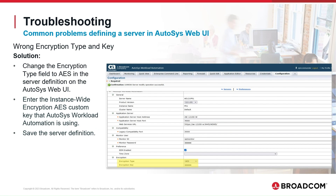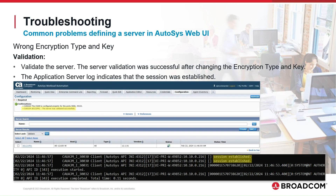To solve the problem, change the Encryption Type field to AES in the server definition on the Autosys Web UI, and enter the instance-wide encryption AES custom key that Autosys Workload Automation is using. Save the server definition. We validated the server again, and this time the validation was successful. The application server log shows the session was established. We solved the problem by changing the Encryption Type to AES and using the custom AES key.